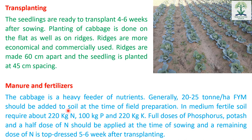Transplanting: Seedlings are ready for transplanting 4 to 6 weeks after sowing. Planting can be done on flat beds or on ridges. Ridge planting is more economical as it reduces irrigation water requirement. Row-to-row spacing is 60 cm and plant-to-plant spacing is 45 cm.